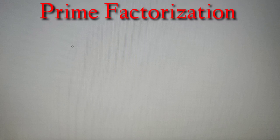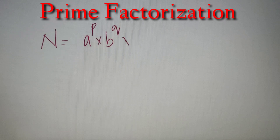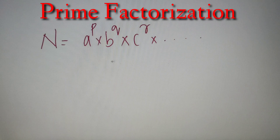Our second topic of discussion is prime factorization of a number. To prime factorize a number is to represent it as a product of its prime factors raised to arbitrary powers. So for example, if you have a number n, we can prime factorize it as a^p × b^q × c^r and so on, where a, b, and c are prime numbers and p, q, and r are arbitrary powers — all whole numbers.